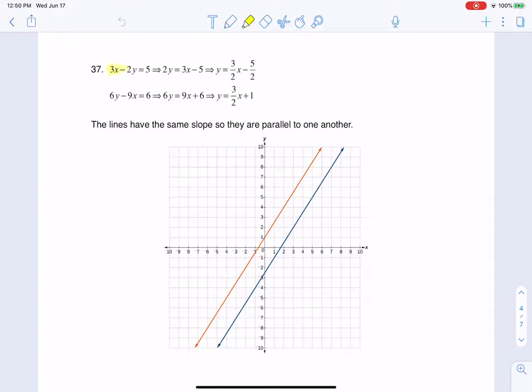So the linear functions as given to us were right here, 3x minus 2y is equal to 5, and 6y minus 9x is equal to 6.